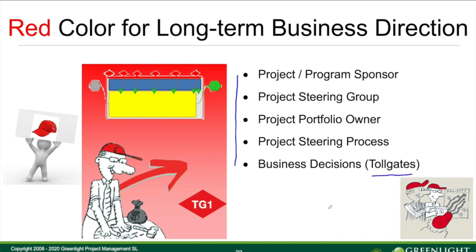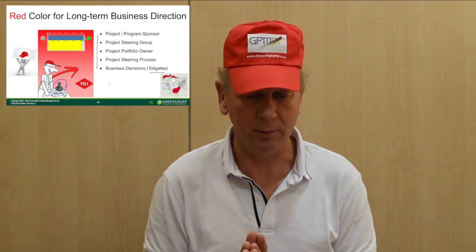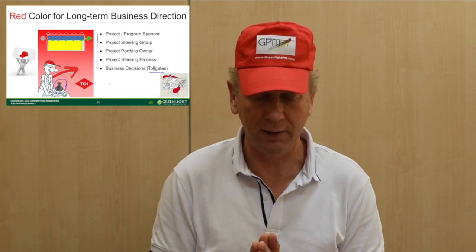We will see later on in the continuing course that we use toll gates to make decisions — go or no-go decisions. The red color is a lot about ensuring that we use money in the best possible way and that we create the most possible value in the projects that we do.